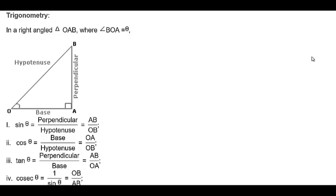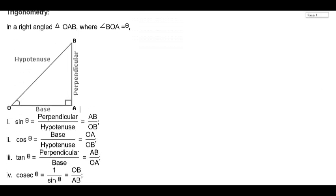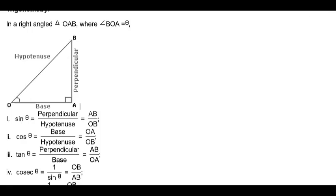Hello friends, today we are going to learn about height and distance. If you are studying about height and distance, you must know about trigonometric functions, and those trigonometric functions will be understood by drawing a right angle triangle. So in a right angle triangle, this is a right angle triangle where angle BOA equals theta. Based on this right angle triangle we will know what the trigonometric ratios are.